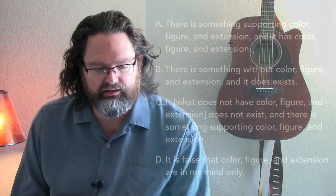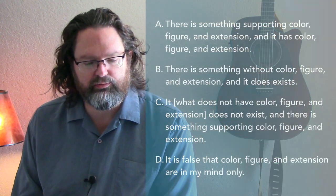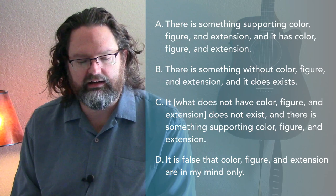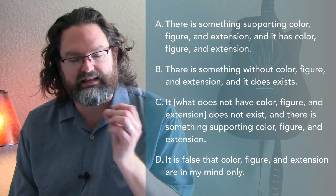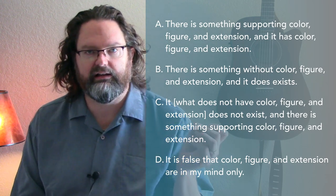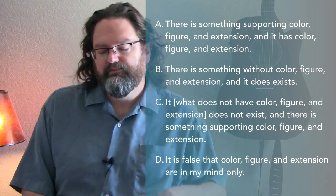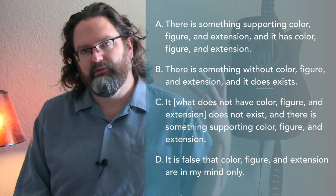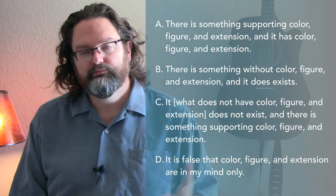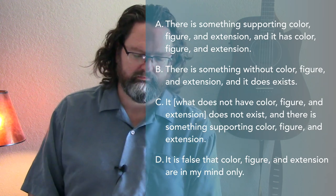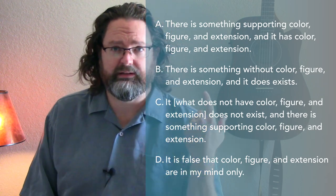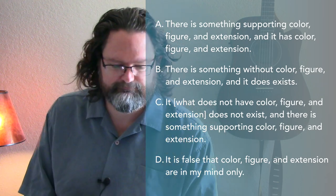So premise A that we labeled here: if there's something supporting color, figure, and extension, then it is without color, figure, and extension. So atoms don't have blue. They cause blue, but they don't have blue.